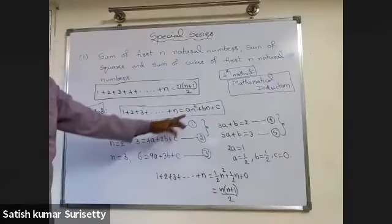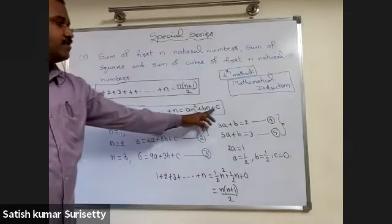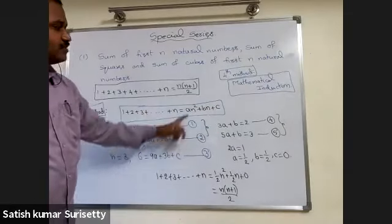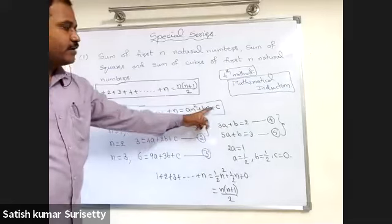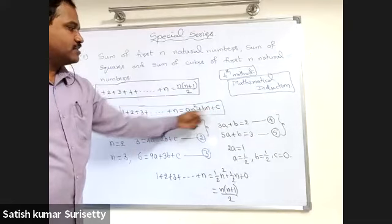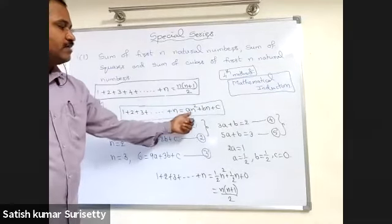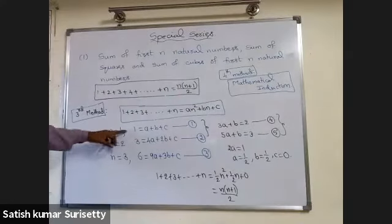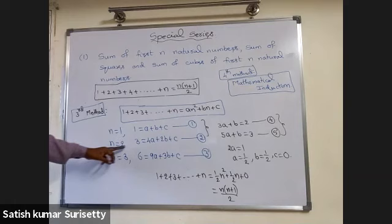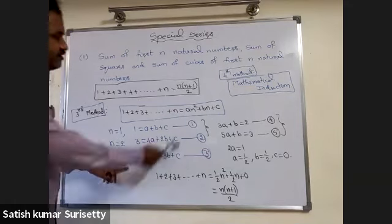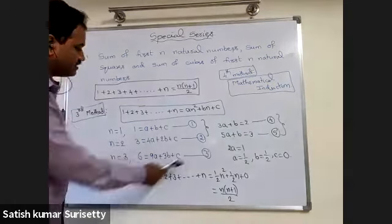We need to find the values of a, b, c — three constants. So substitute three numbers for n: n equal to 1, n equal to 2, and n equal to 3. Then we get three equations.